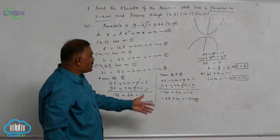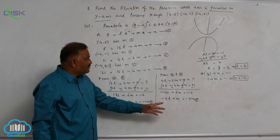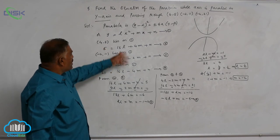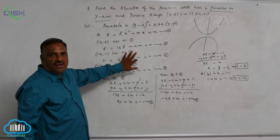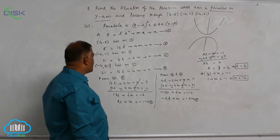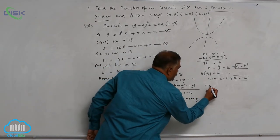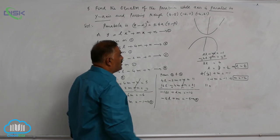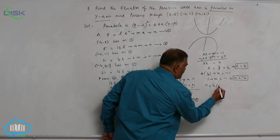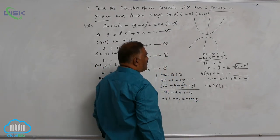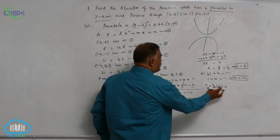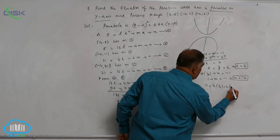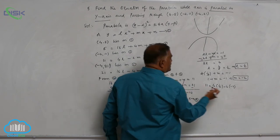Now substitute the values of l and m in any one of second or third or fourth equation. Let us take third equation. 11 is equal to 4l, 4 into 1 by 2 plus m value minus 2 into minus 2 plus n.